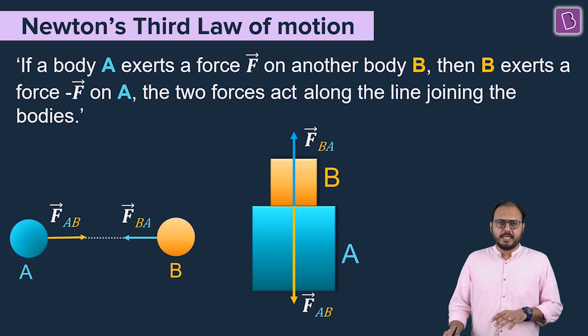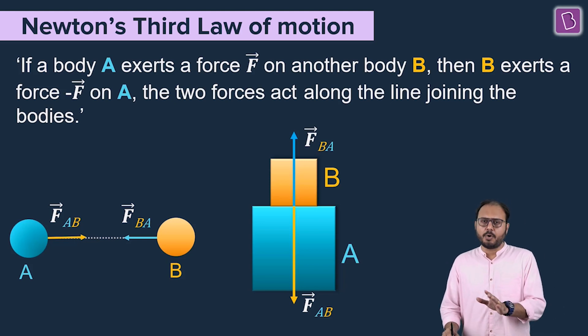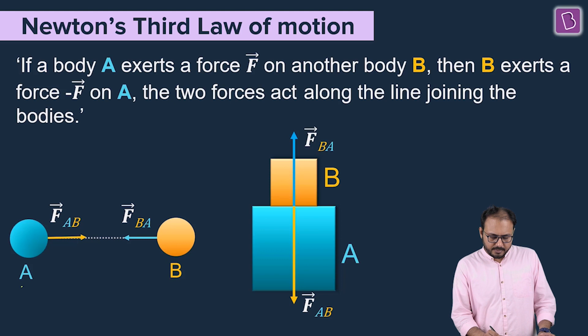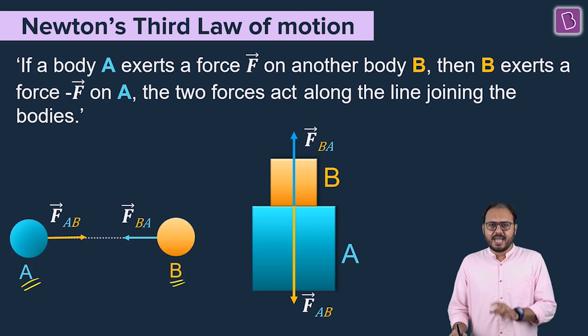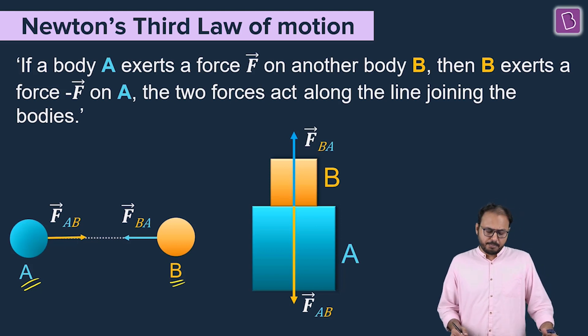If a body A exerts a force F on another body B, then B exerts a force minus F on A. And the two forces act along the line joining the bodies. Brilliant.